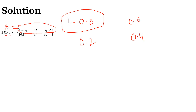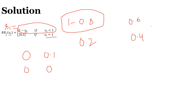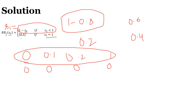What if s2 is equal to 1? If I bid 0, I get zero payoff. If I bid more than 0, say 0.1, the sum becomes 1.1, which is greater than one, so I again get zero payoff. Whether I bid 0.2 or even 1, I always get zero payoff. So I am indifferent between all numbers in [0,1], and my best response is to choose any number between 0 and 1.